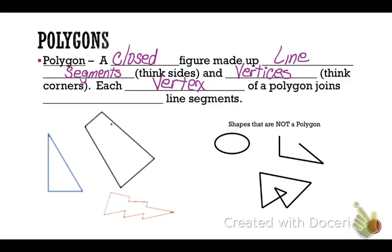Each vertex of a polygon joins only two line segments. Looking at these shapes, we can see some polygons and some that are not polygons. On the left, we have polygons that have sides that are lines joined at a vertex — think of corners. We could have them like this lightning bolt where the corners are caved in, and that's okay.